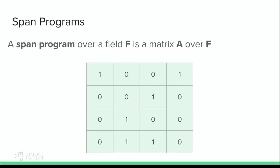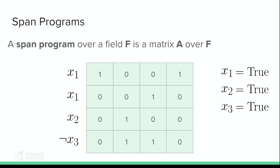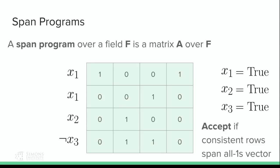A span program is just a matrix over a field. So attached to the rows of the matrix, we're going to attach Boolean literals — positive and negative. A span program is a computational device for computing some Boolean function. If I give you a truth assignment to the literals on the rows, we pick out the rows which are consistent with the Boolean assignment, and then we check if they span the all-ones vector. In this example, everything is true, so these rows would be consistent with the input, and by summing them up you can see we're spanning the input vectors, so we would accept.